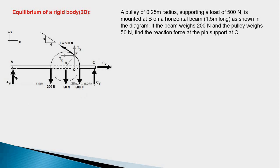Here is the free body diagram. At the roller support we have one single force in the vertical direction; at C we have two components of reaction force. The cable makes contact with the pulley between this point and this point, so when we cut the cable the tension forces get exposed. This tension force T acts in this direction, with its point of application at P. At the other end, the cable leaves the pulley and the force acts vertically downward — that is the 500-newton tension force in the cable.